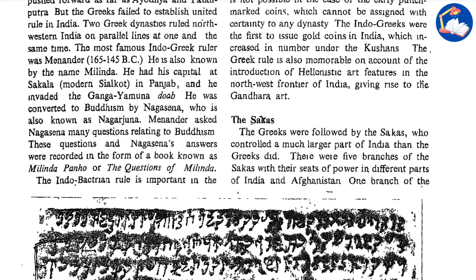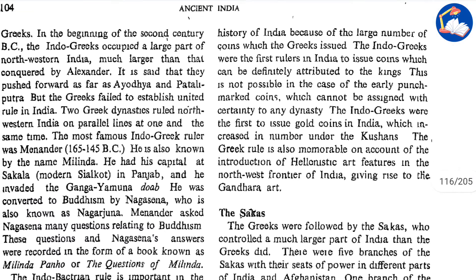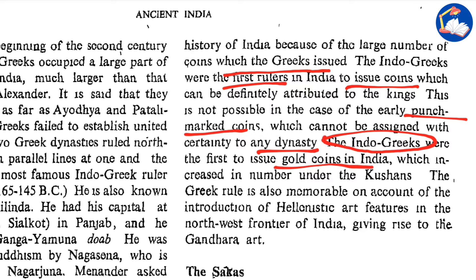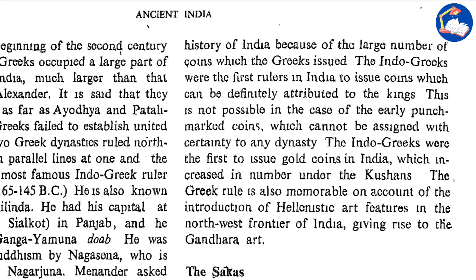The Indo-Bactrian rule is important in the history of India because of the large number of coins the Greeks issued. The Indo-Greeks were the first rulers in India to issue coins which can be definitely attributed to specific kings — this is not possible in the case of early punch-marked coins, which cannot be assigned with certainty to any dynasty. The Indo-Greeks were also the first to issue gold coins in India, which increased in number under the Kushans. Under the Kushans, a large number of coins were issued, and the purest coins were later produced by the Guptas.